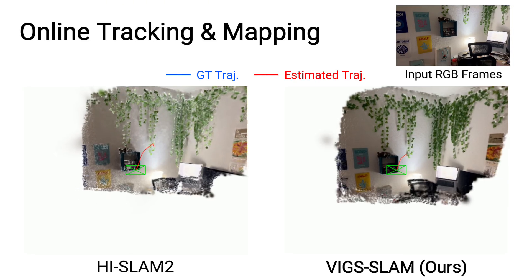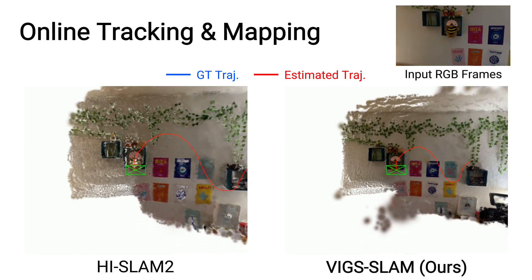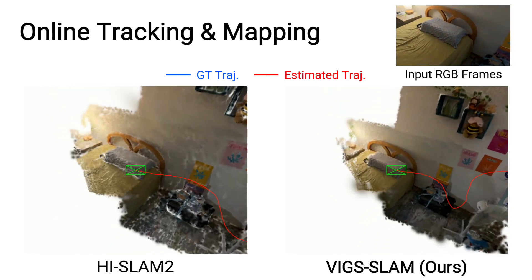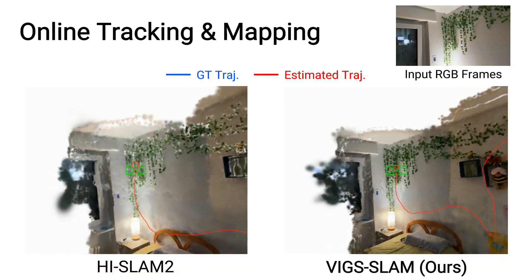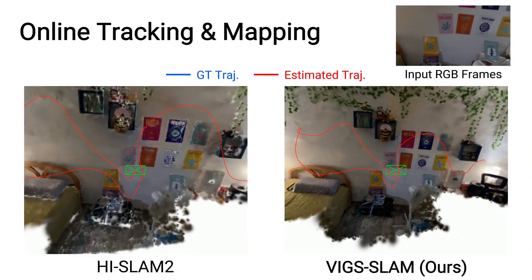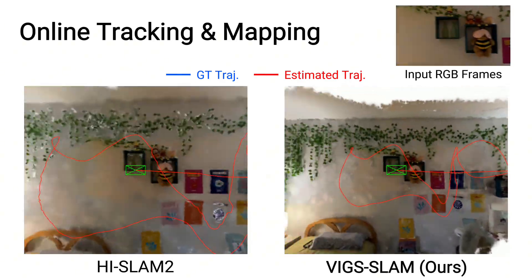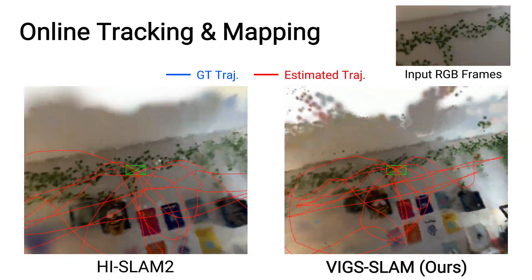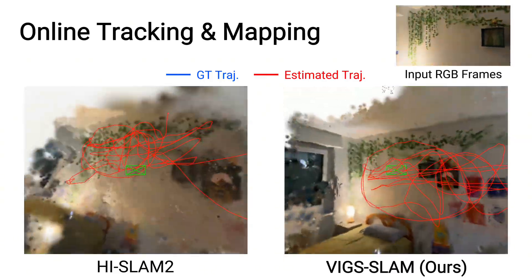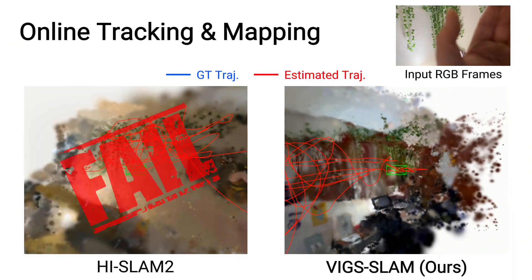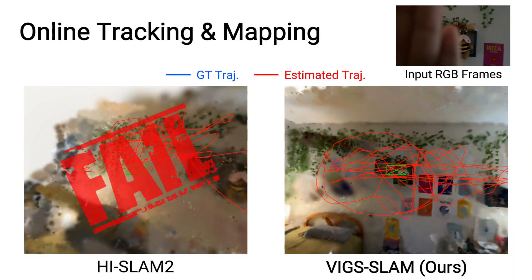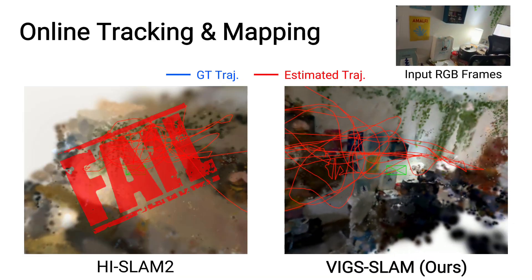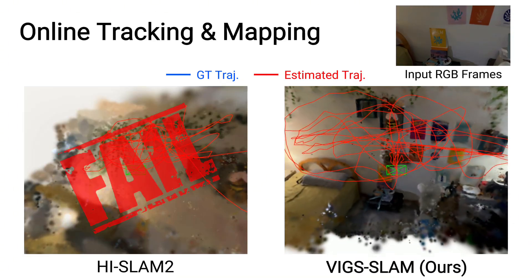We additionally capture an iPhone sequence with synchronized RGB and IMU measurements. The first part of the recording is standard capture without extreme motion. Both HighSlam2 and VIGS SLAM achieve stable tracking and reconstruct reasonable Gaussian maps, with ours exhibiting fewer artifacts. We then introduce more challenging conditions, including rapid camera motion and severe motion blur. HighSlam2 can tolerate mild motion blur but fails under large blur. We further obstruct a large portion of the camera view for an extended period. Despite these challenges, VIGS SLAM maintains robust tracking and continues to reconstruct a consistent Gaussian map.